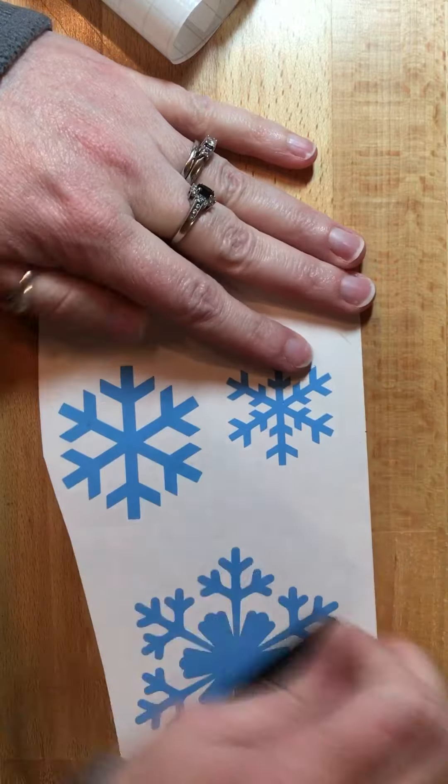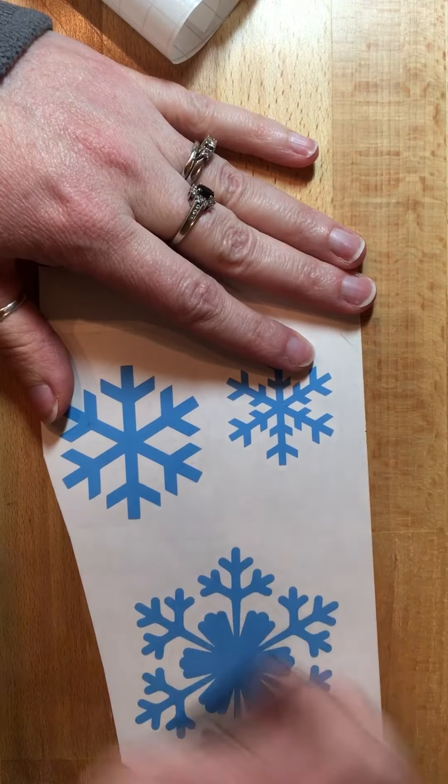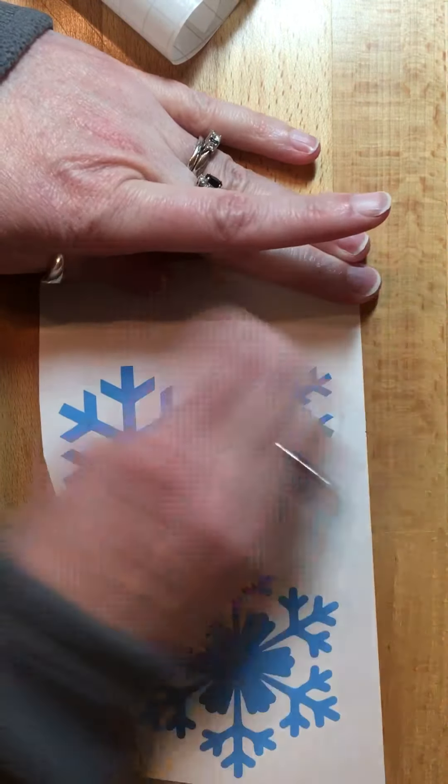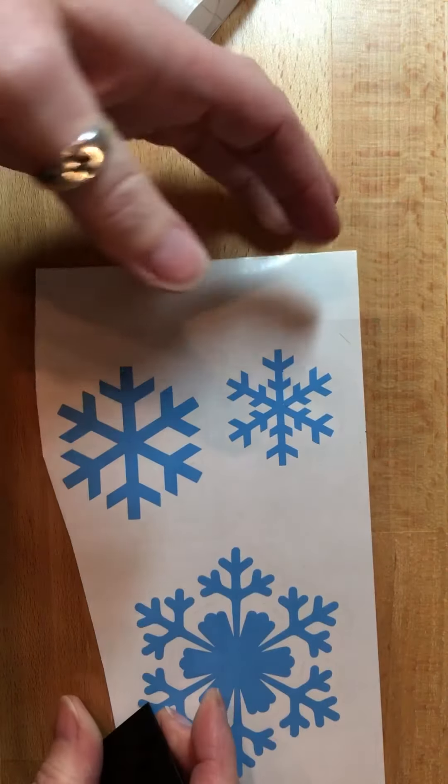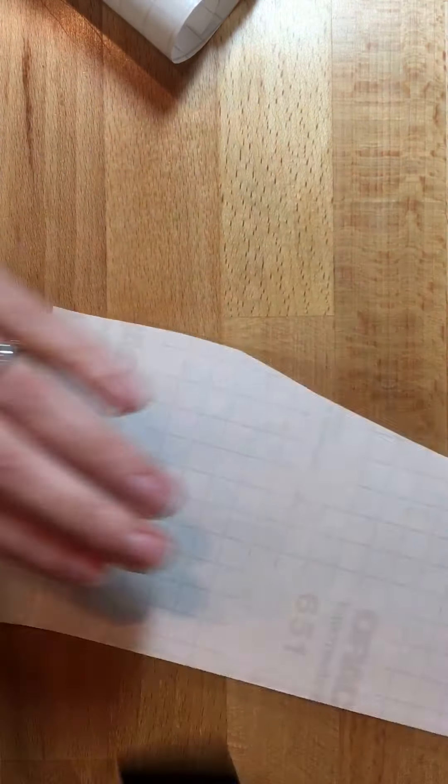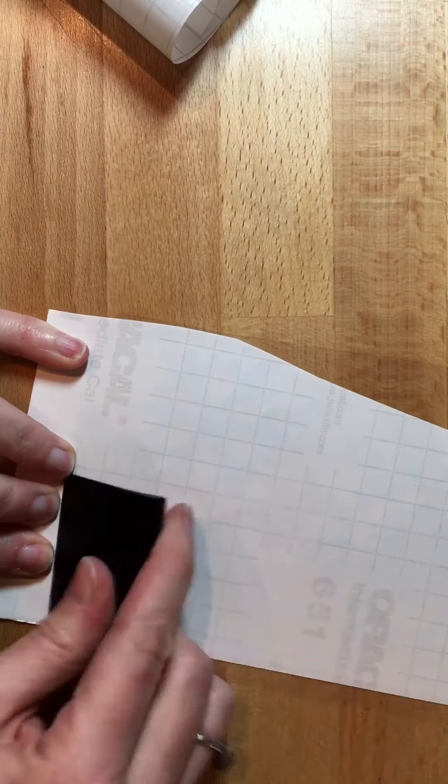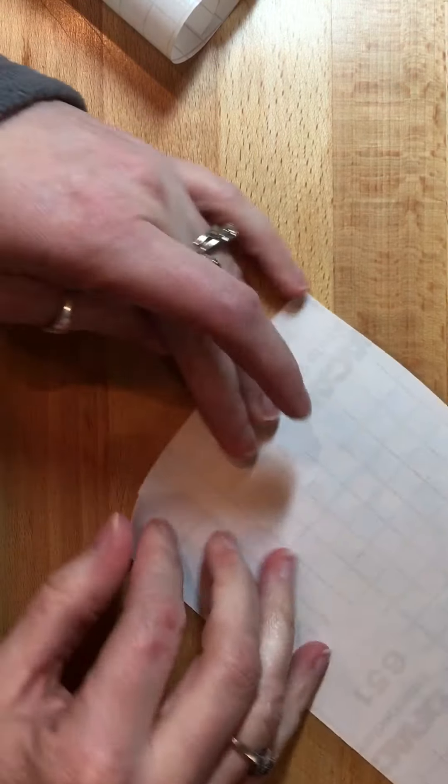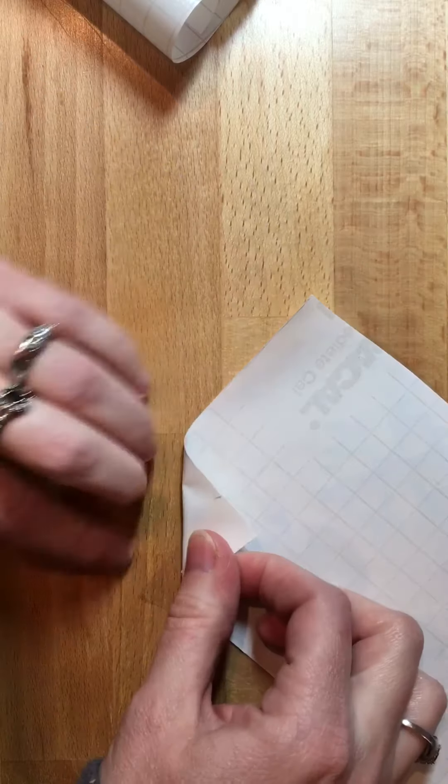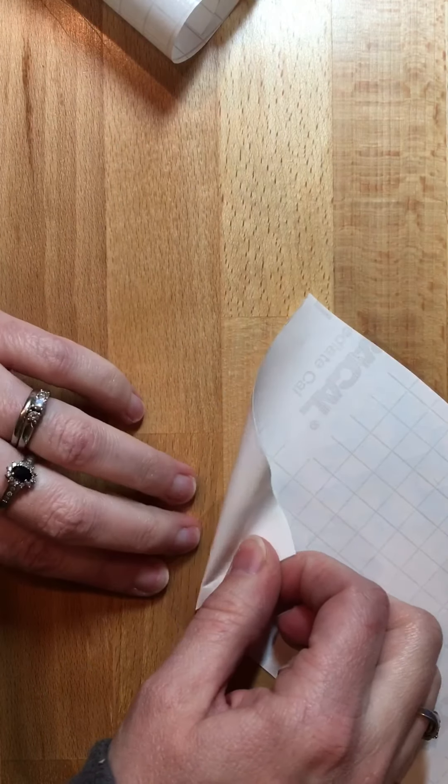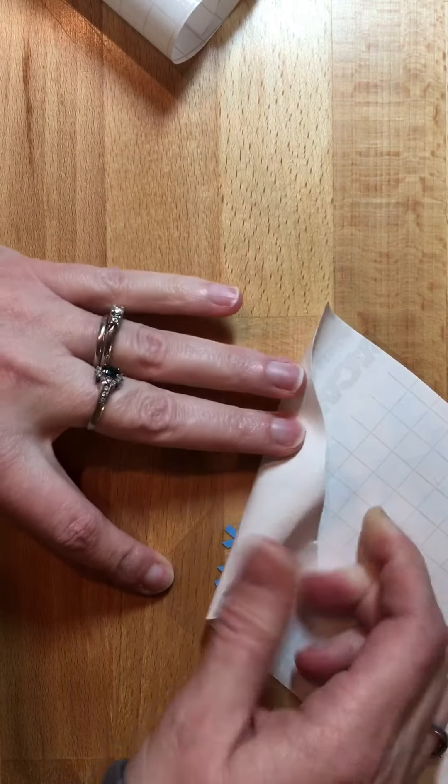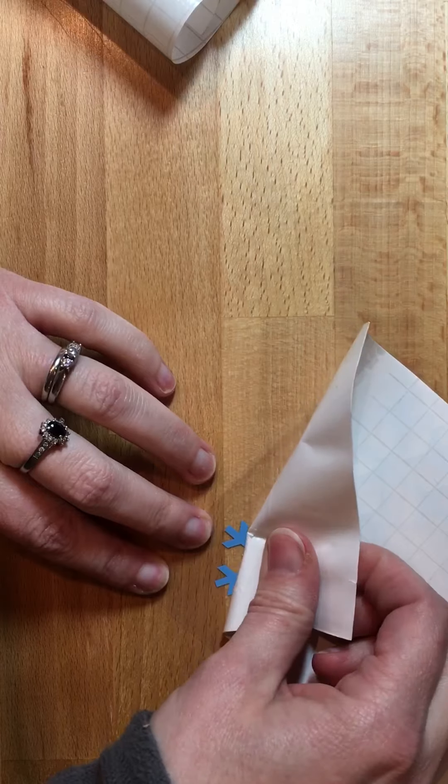I burnish it one way, burnish it on the backside, and then I'll just start from one end. The sharper you can peel your backing away the better, so at an angle.